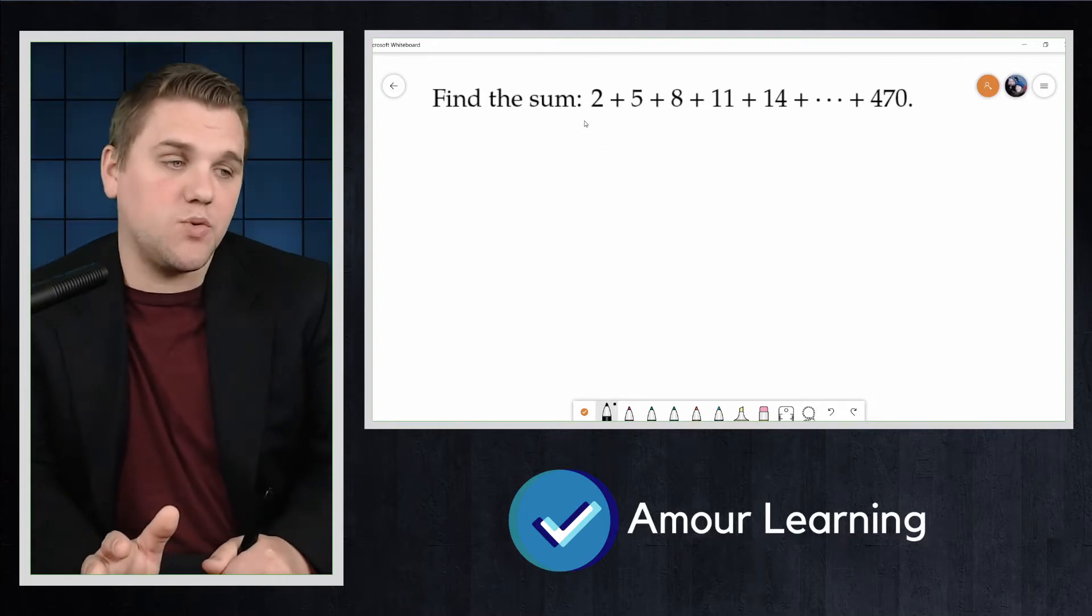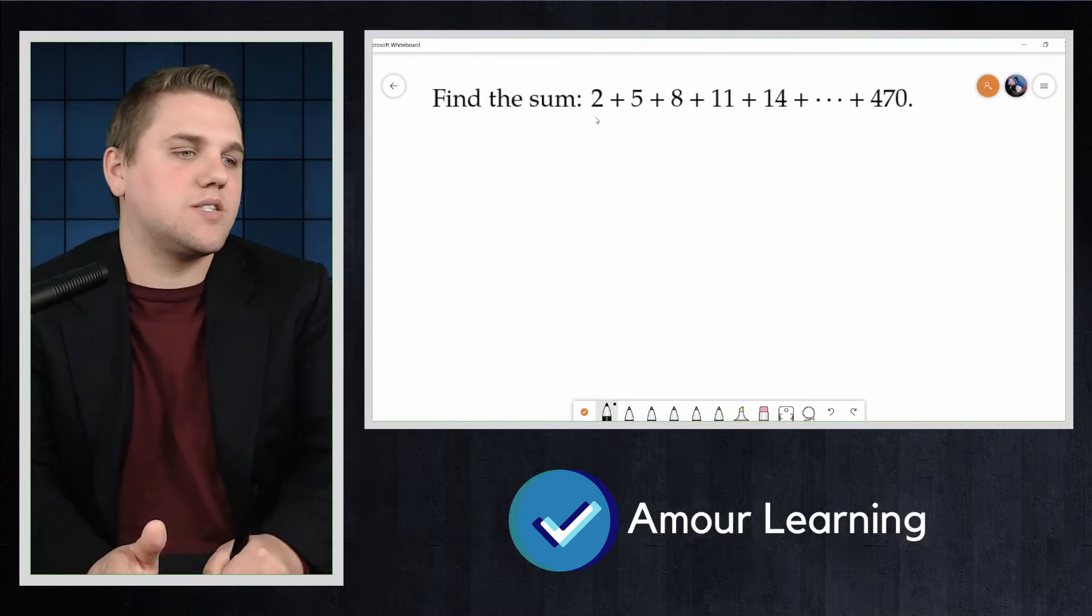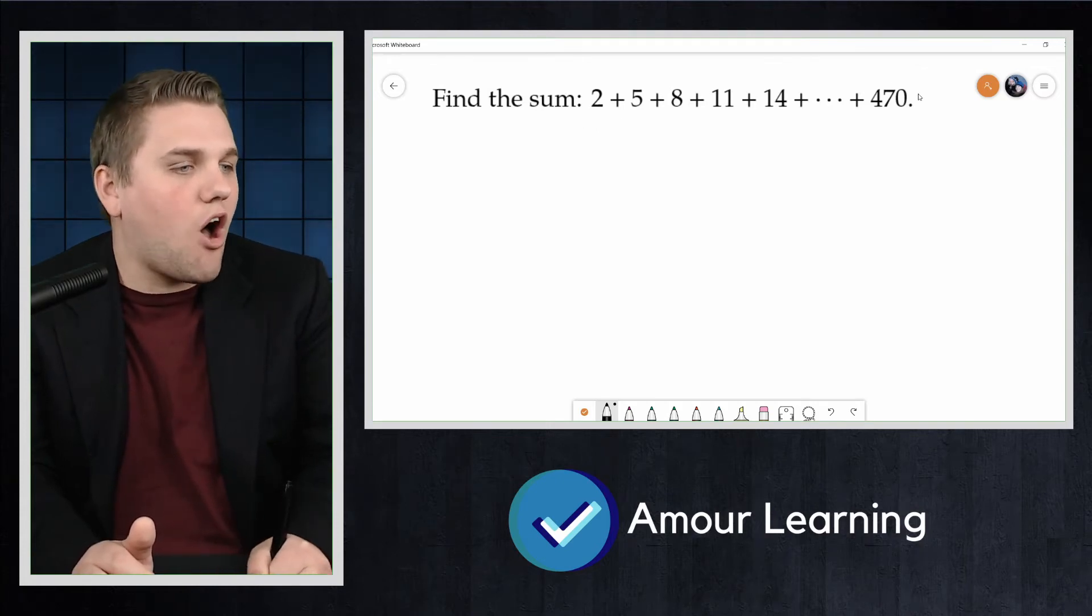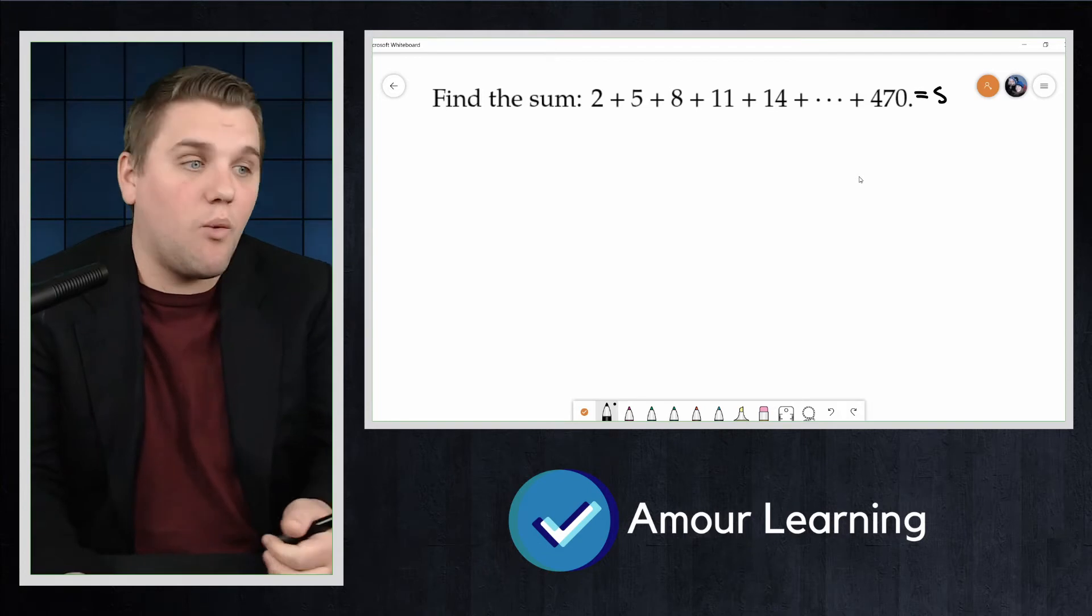So the trick here when you're adding up partial sums of arithmetic sequences is we can rewrite this. We can call this number here s, the total sum. We don't know what s is; we're trying to figure out what s is.